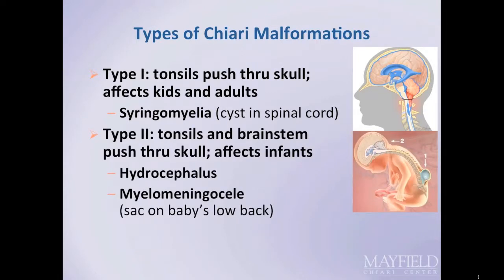Type 2 is a more complex deformity, present at birth, affecting infants. It occurs with the birth defect myelomeningocele, a form of spina bifida. When the spinal canal does not close before birth, some of the spinal cord protrudes like a sack from the baby's back. Both the brain stem and tonsils are pulled down into the canal, blocking CSF flow and causing hydrocephalus. Symptoms include trouble swallowing, gagging, high-pitched breathing, a weak cry, arm weakness, and developmental delays. This type is correctly called Arnold Chiari malformation.